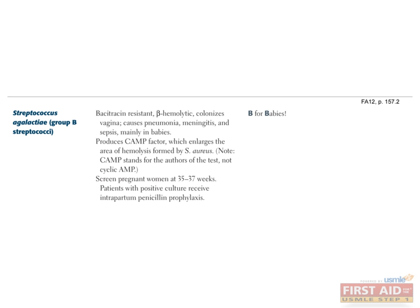Strep agalactiae, or group B strep, is a beta-hemolytic gram-positive cocci distinguished from group A strep by the fact that it is bacitracin-resistant. You can think of the B as standing for babies, since group B strep mostly causes diseases such as pneumonia, meningitis, and sepsis in infants. Newborns usually acquire the pathogen via passage through a vaginal canal that has been colonized with the bacteria.